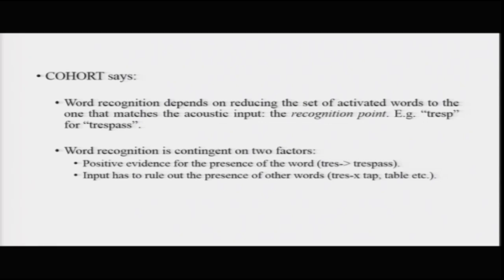Successful word recognition according to the cohort model is contingent on two factors: first, positive evidence for the presence of the word from the incoming stimulus, and second, the input must rule out the presence of other words - nothing else should be activated at that point. Both processes converge at a point in time when you are hearing the signal, which is referred to as the recognition point.